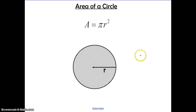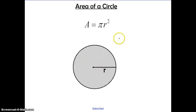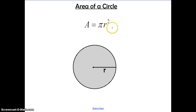The formula to find the area of a circle is A equals pi R squared. Remember, area is how much space it takes to cover a certain shape. R stands for the radius. Be careful — this formula is very similar to circumference. Circumference is 2 pi R, but area is pi R squared.